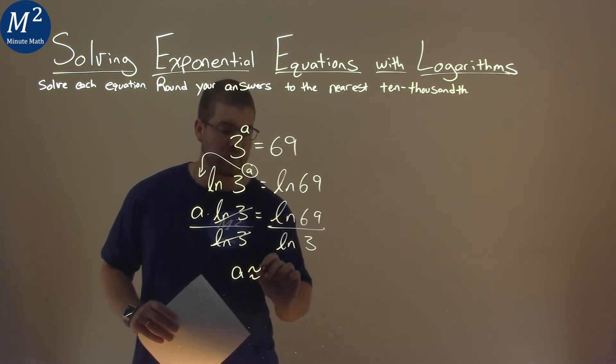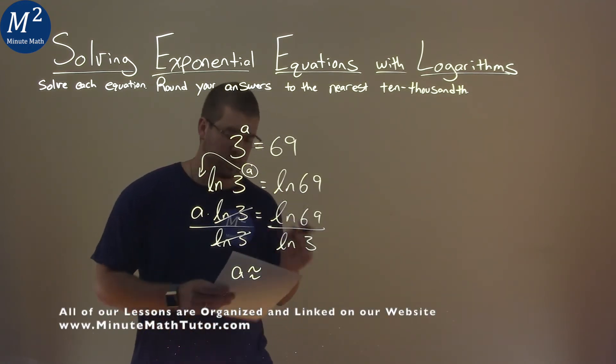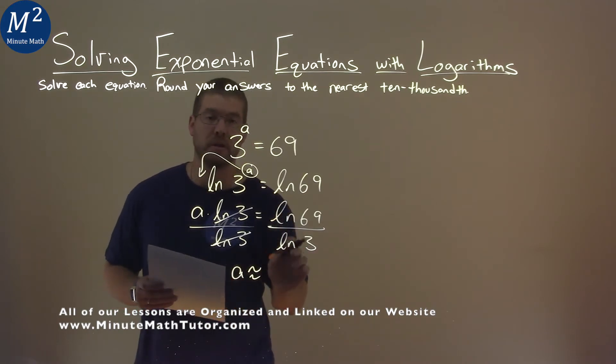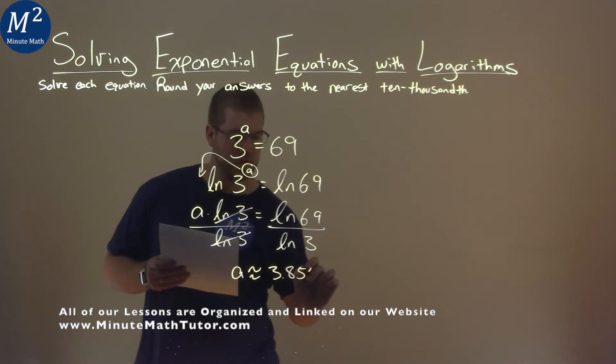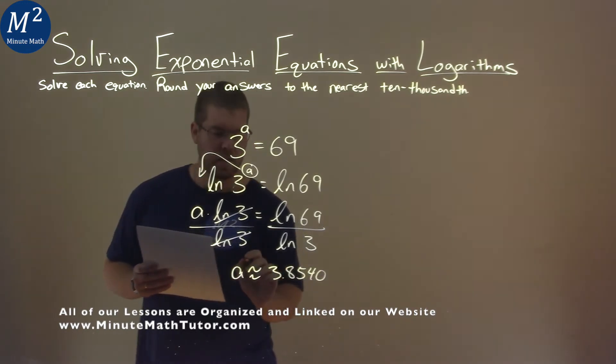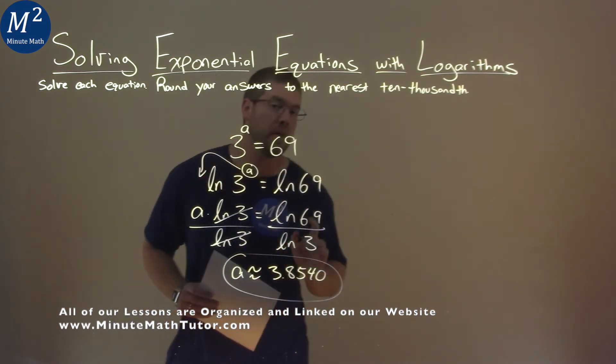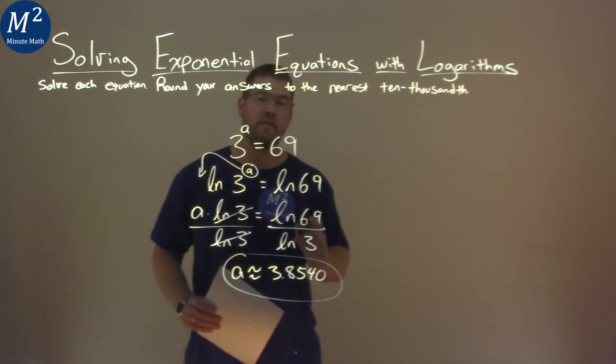Now, this is going to be approximate here, but when we use our calculator, natural log of 69 divided by natural log of 3, and we round it, we get approximately 3.8540. And so our final answer here is a is approximately equal to 3.8540.